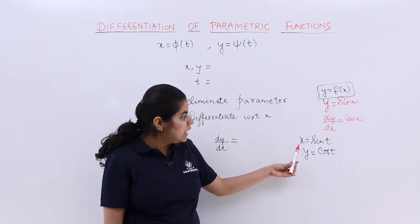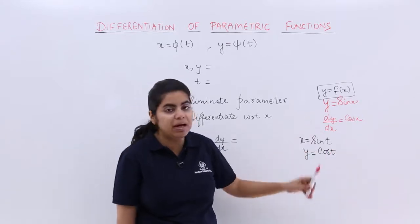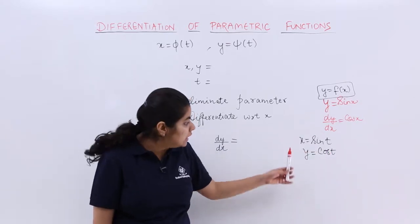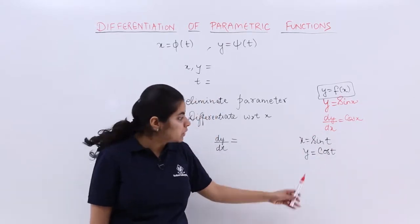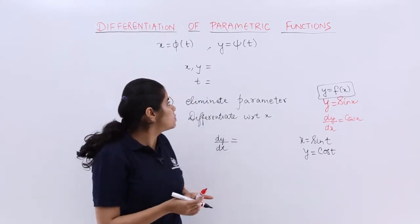Here you see x has a parameter t involved, y has a parameter t involved. So basically x is a function of t, y is a function of t, where t is a parameter. That is what I am saying.